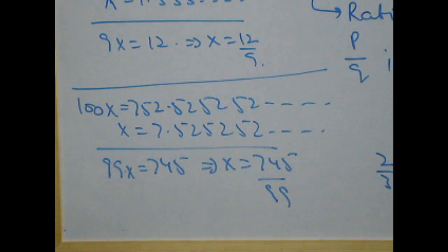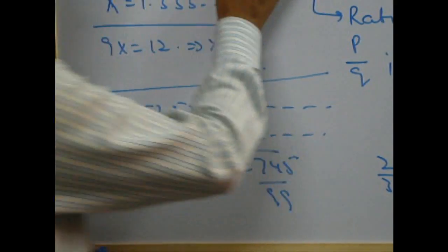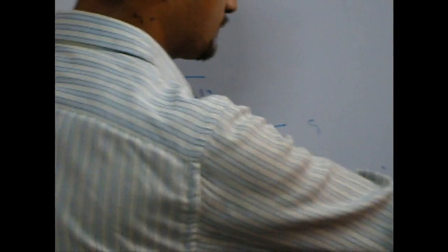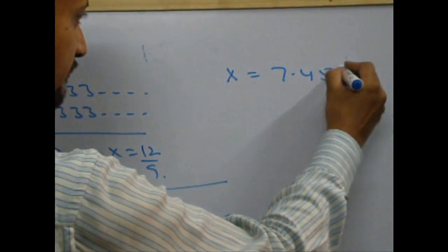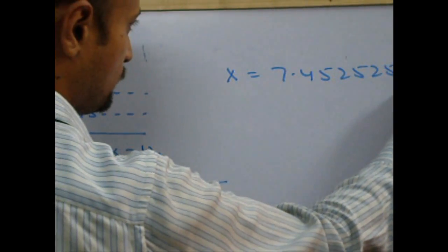I hope this is clear to all. Let's move on to one more step of difficulty level. Say, the question is 7.452525252 and so on.